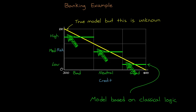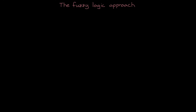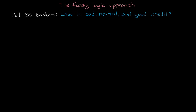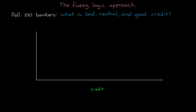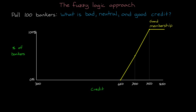You can see how much error this model has in places, and these discontinuous jumps show the result of crossing over from one set to another. Now let's compare this to a fuzzy logic approach. Imagine we poll 100 bankers, and we ask them to assign where they think the transition is from bad to neutral credit, and the transition from neutral to good. And more than likely they're going to be different values, since these are vague terms. Let's assume that every banker thought 750 and above is good credit, but only half of them thought that 700 was good, and none thought that 650 was good. This traces out the particular membership function for good credit. And we could do the same for neutral credit and for bad credit.